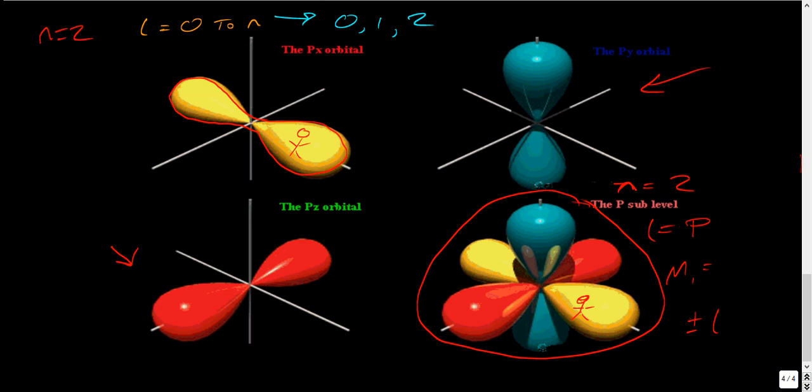And our M L equals plus or minus L. L, the greatest number is two, so we just do plus or minus all of this. So minus two, minus one, zero, plus one, plus two.